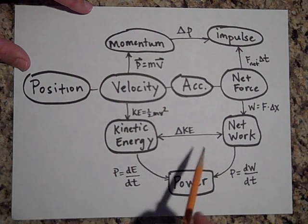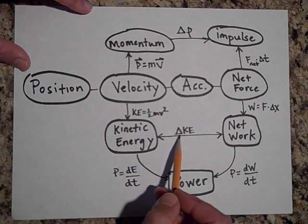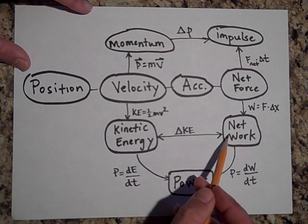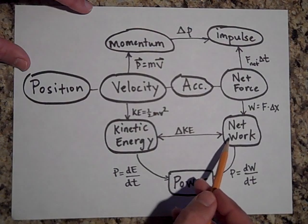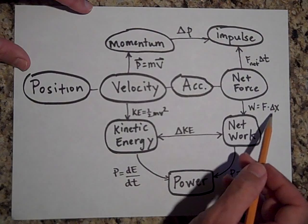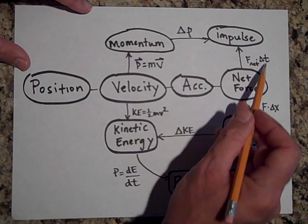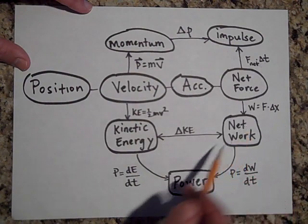Okay, if you look over here, the kinetic energy—if I take the change in kinetic energy, that's the net work done. And the net work done is equal to the net force times delta x, so you take the net force times delta x, not delta t but delta x this time, and that gives you the net work.